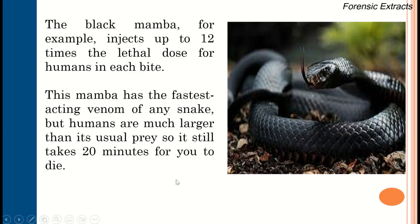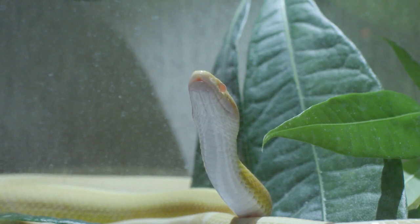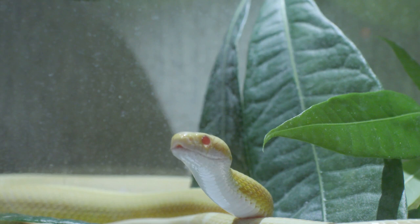The black mamba injects up to 12 times the lethal dose for humans in each bite, making it the most venomous snake with the fastest-acting venom. Since humans are larger than its usual prey, it takes about 20 minutes for a human to die.